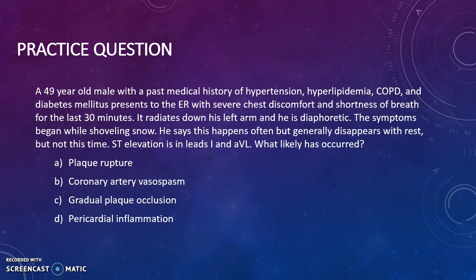Let's go back to the practice question. The possibilities are plaque rupture, coronary artery vasospasm, gradual plaque occlusion, and pericardial inflammation. The answer is plaque rupture. Coronary artery vasospasm occurs in variant angina, more common in females and less likely given this patient's CAD risk factors. Gradual plaque occlusion occurs in stable angina, which would not have ST elevations and would remit with rest. Pericardial inflammation occurs in pericarditis, but it generally has diffuse ST elevation.